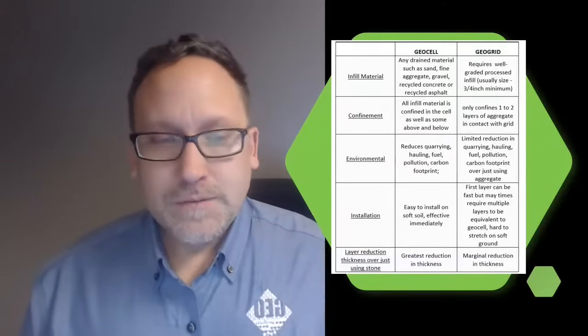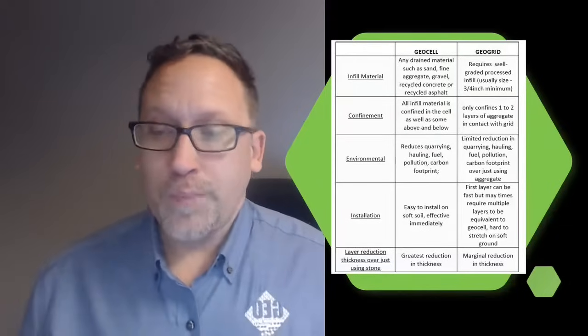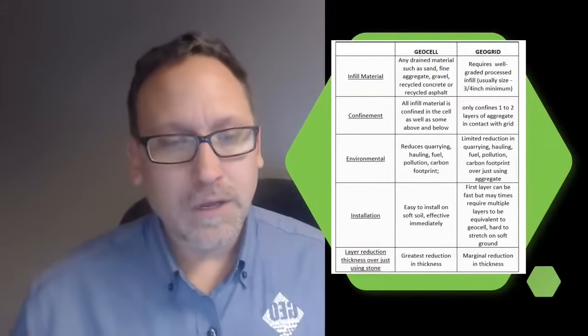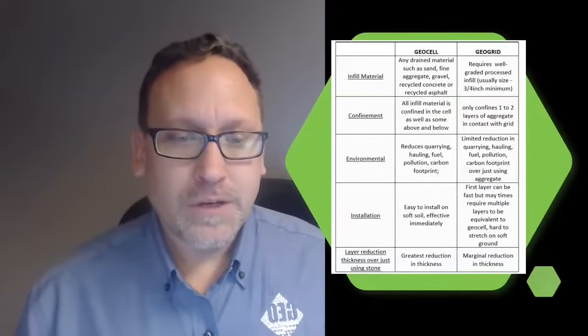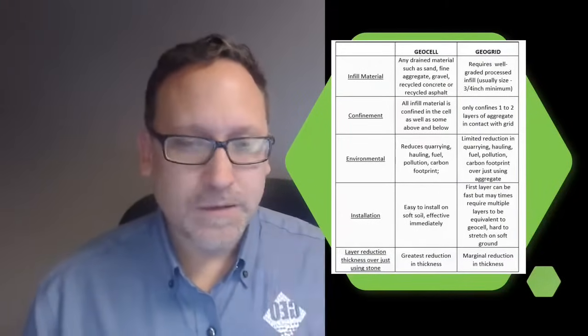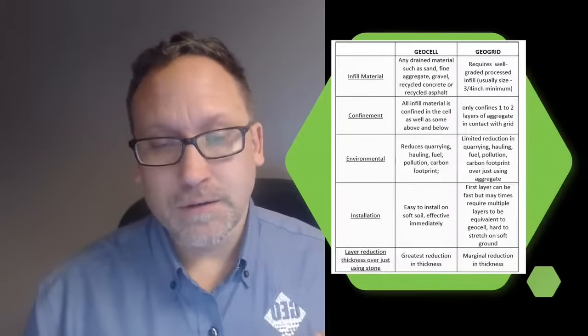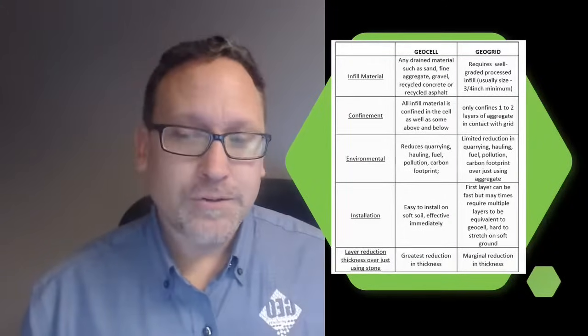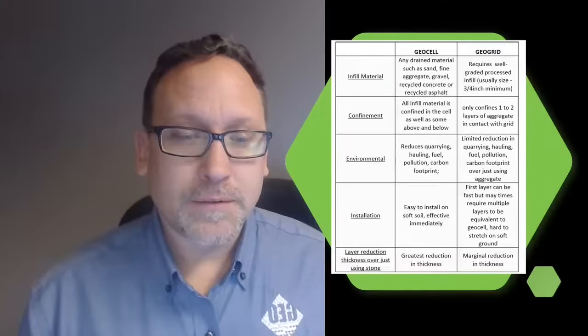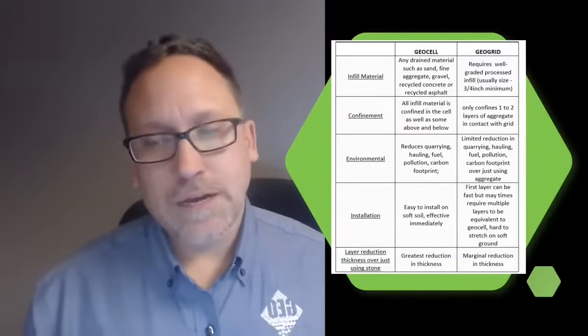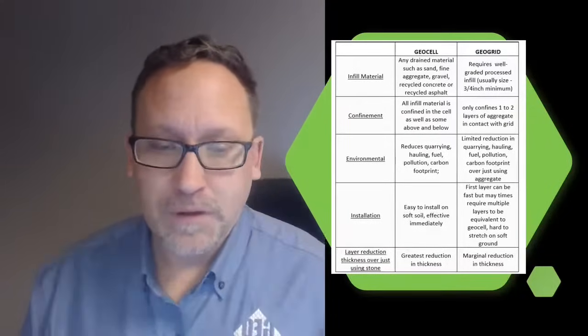For environmental impacts, they're both going to help you utilize less materials when you're building. But because you can use pretty much anything to infill geocells usually you can use any type of local infill. You can even use a lot of the waste material that you're digging off of it taking off the site and just fill that in the geocells. You're reducing your haul cost. Where geogrids you're still going to have to use that high quality aggregate so you're going to have to truck that in. But you're using less of it so it's still an environmental advantage.